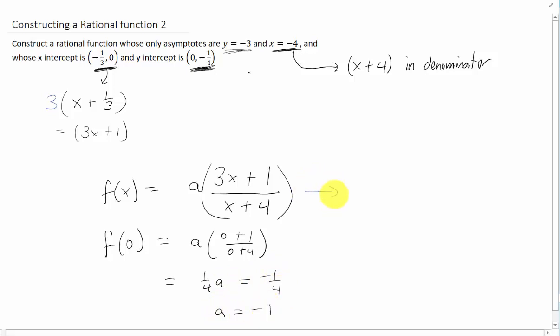Now what does that mean for our function? Well our function just has to have a negative 1 on it. I said a has to be negative 1. I just put it right there. And our new function which still has the same x intercept and it still has the same vertical asymptote now has a y intercept of 0 negative 1 fourth.